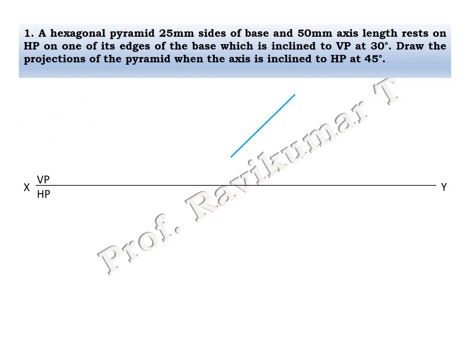The first problem: a hexagonal pyramid with 25mm sides and 50mm axis length rests on HP on one of its edges. It is an edge condition problem. The first step is to draw the edge condition hexagonal pyramid with the base edge inclined to VP at 30 degrees. So the edge is inclined to VP at 30 degrees. Draw the projection when the axis is inclined to HP at 45 degrees.